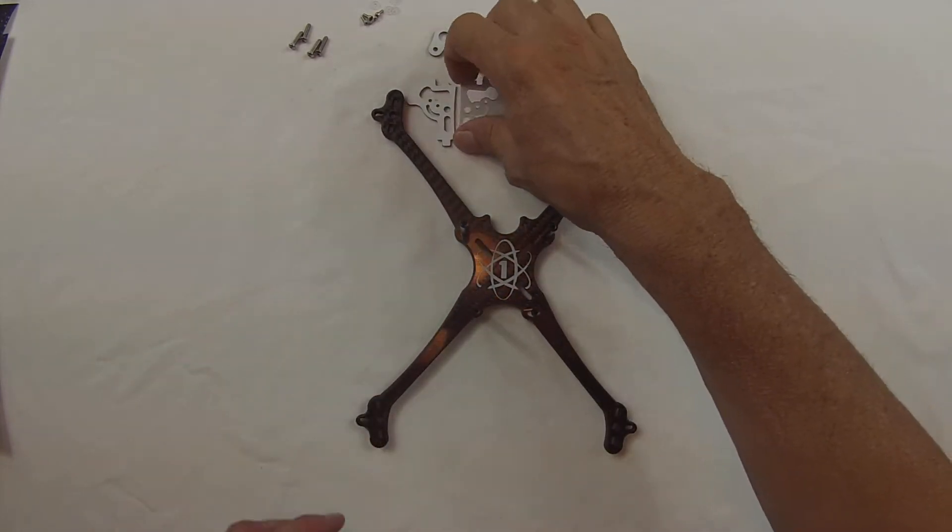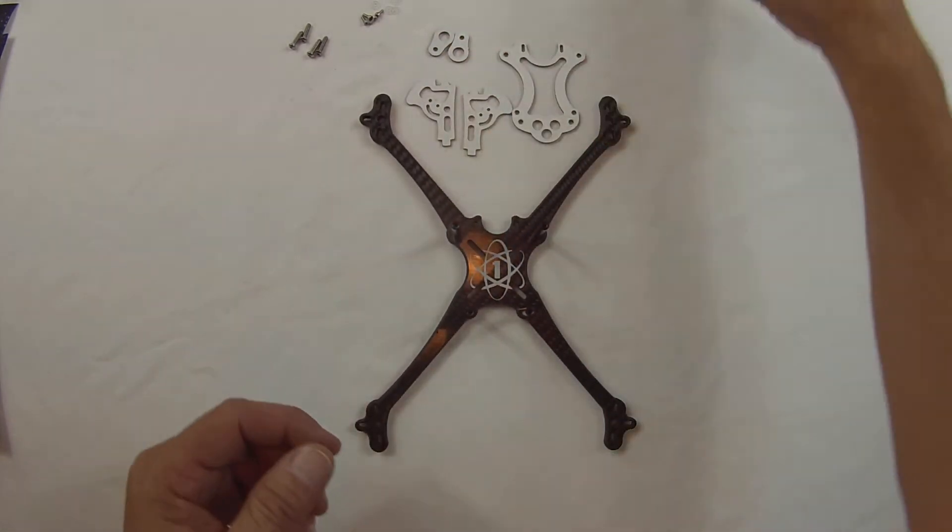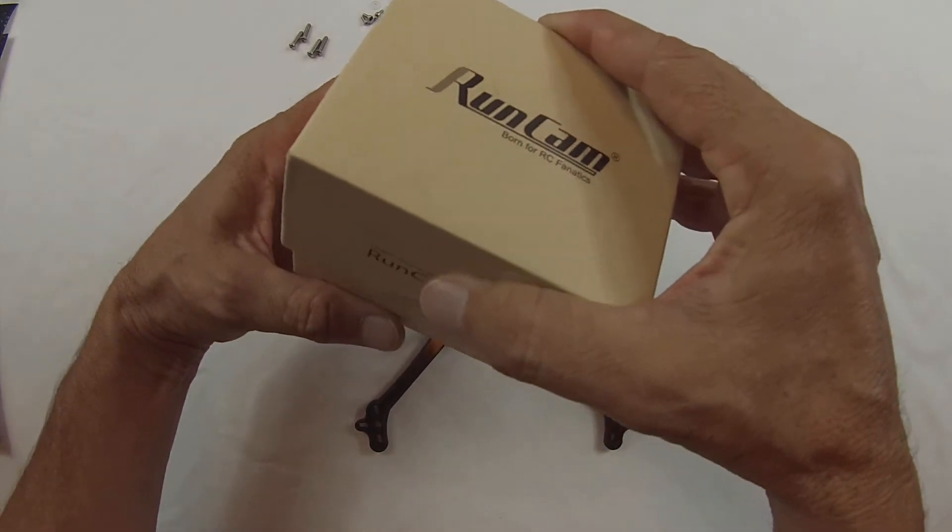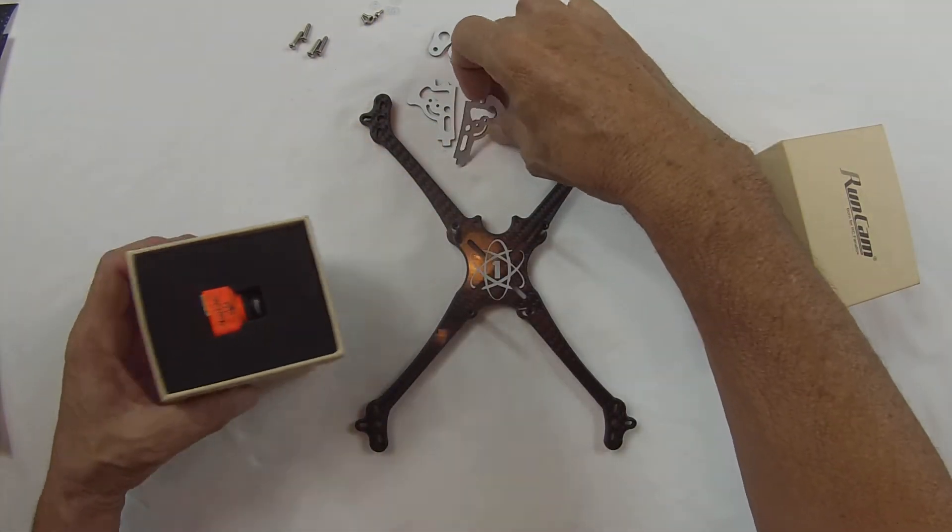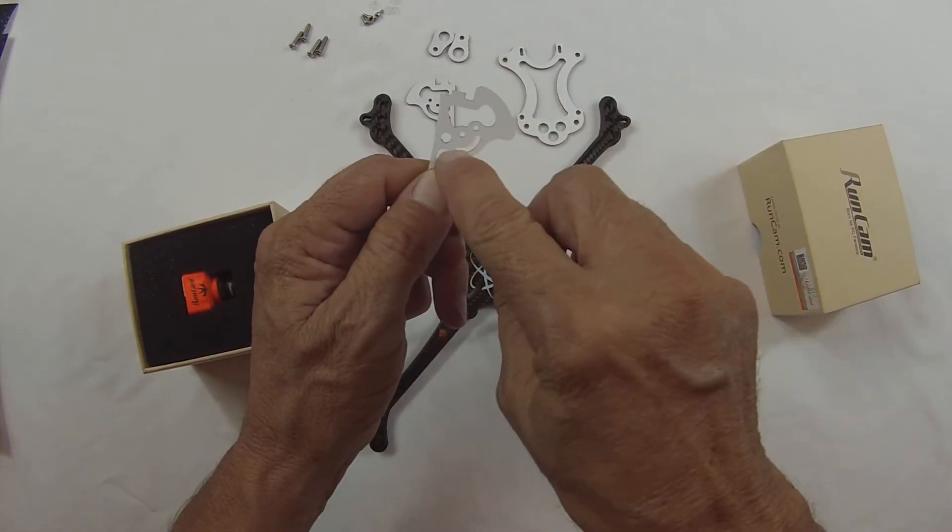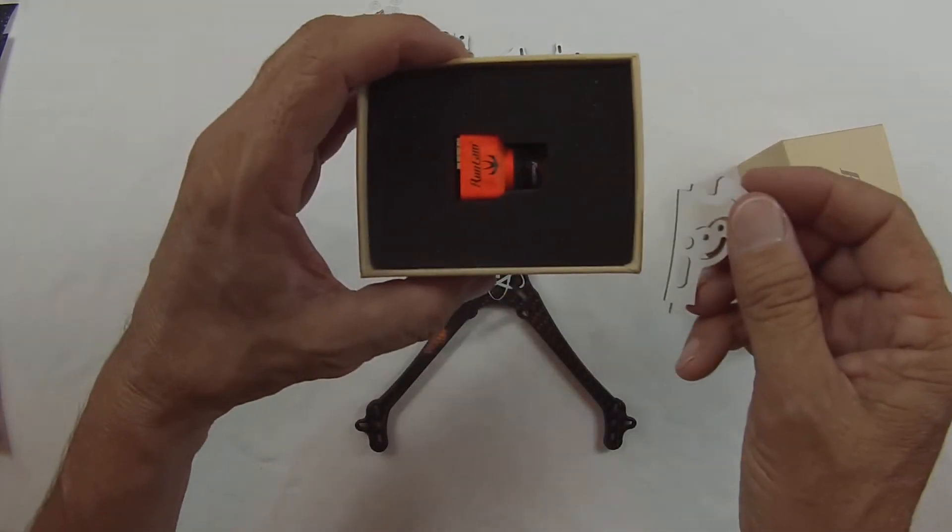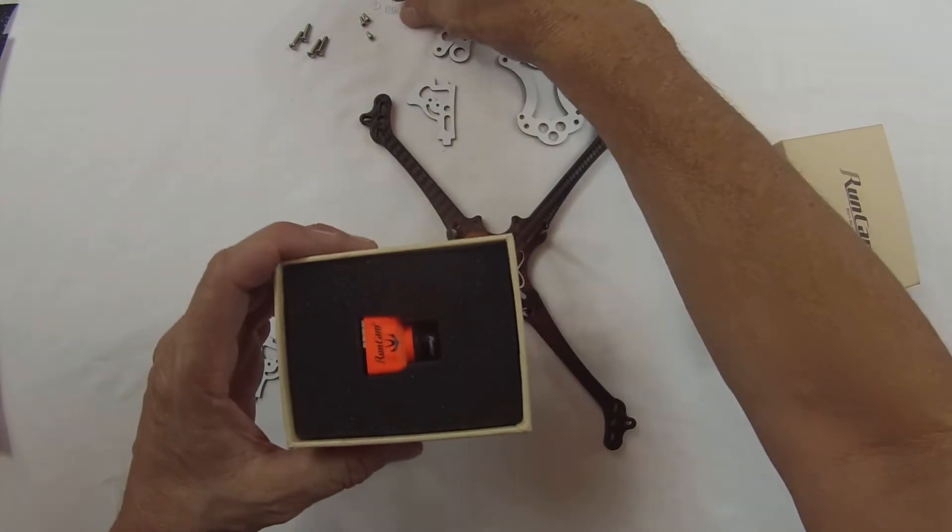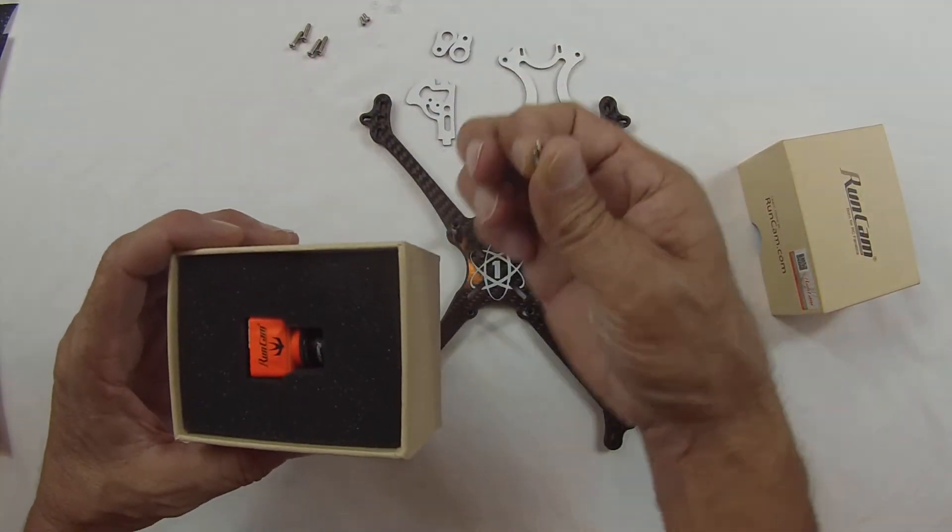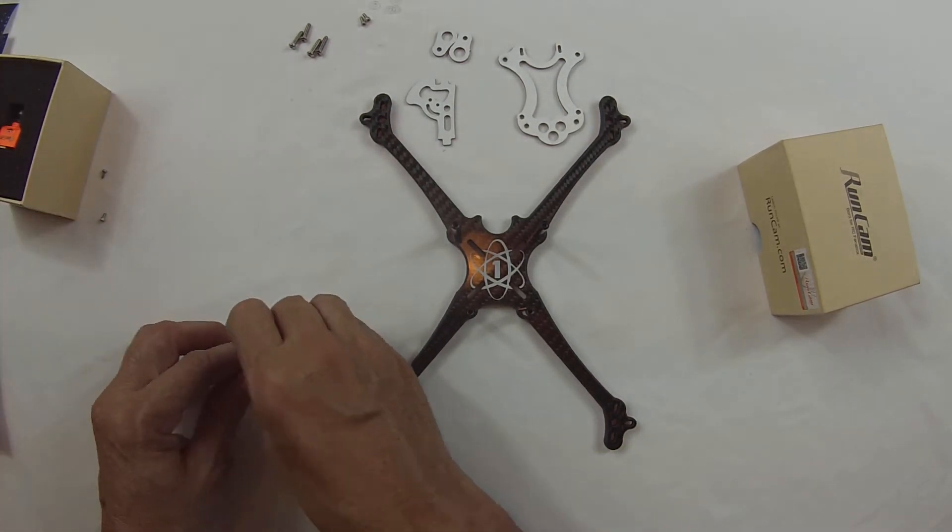Now I'm going to go ahead and put the camera together. So this is the camera you can run. The Runcam. And that's why that slot is made there for this guy. The screws that you would use for this would be the two short ones. So we're going to go ahead and put these over off to the side.